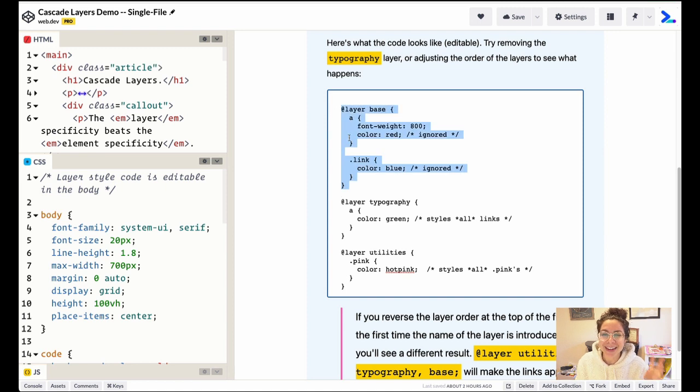So here, I start with a layer called base and I'm setting the a tag. So all of the links, everything with an a tag to a font weight of 800 and a color of red. I'm also creating a element here with a class of link and that is going to get color blue.